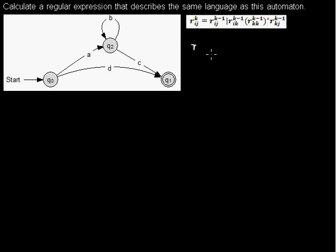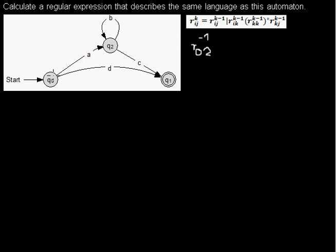Going through is a different thing than starting and ending. For example, if you want to go from state 0 to state 2, and you are not allowed to go through any state — because there are no states with a number smaller than 0 — then you just want to find the regular expression for the arc from 0 to 2. And you are not allowed to go through any other state. So it's just this A.